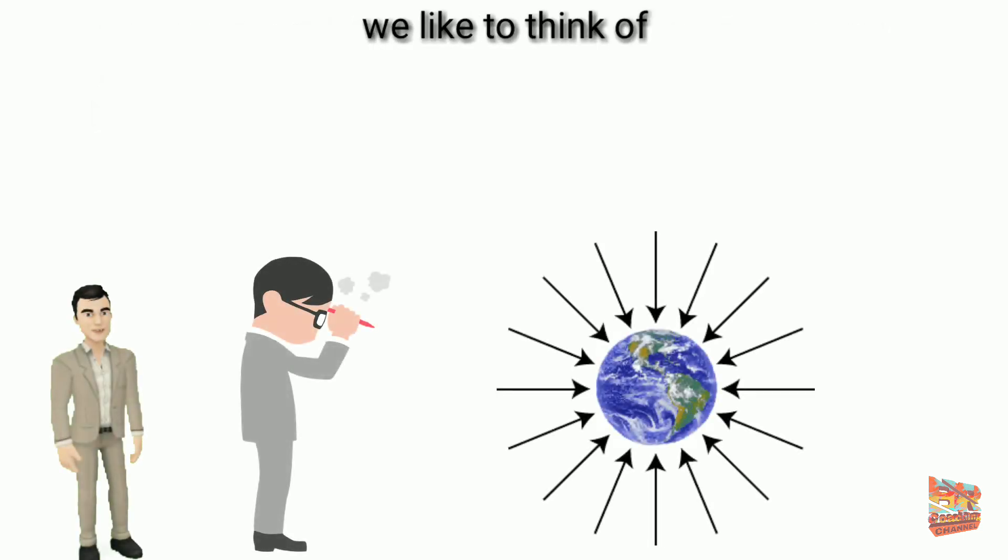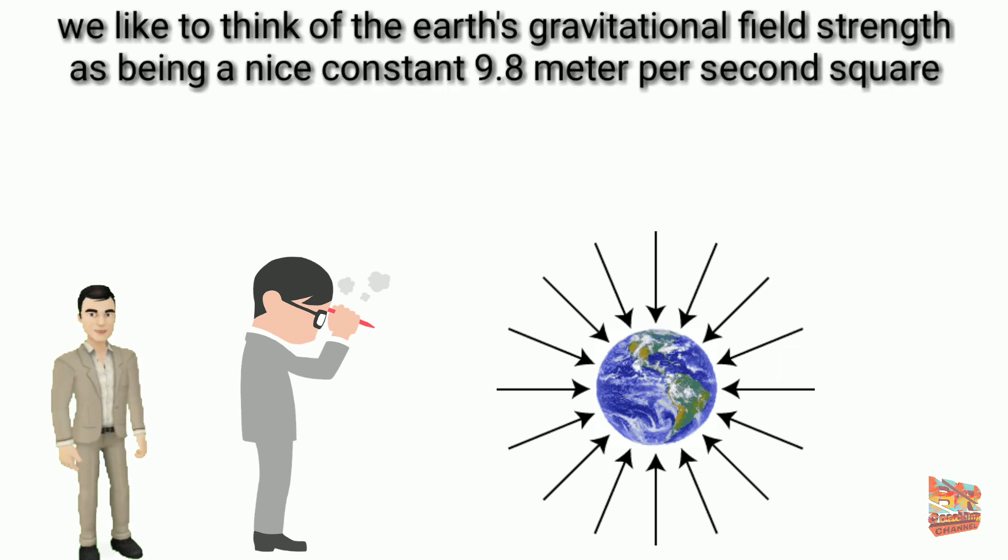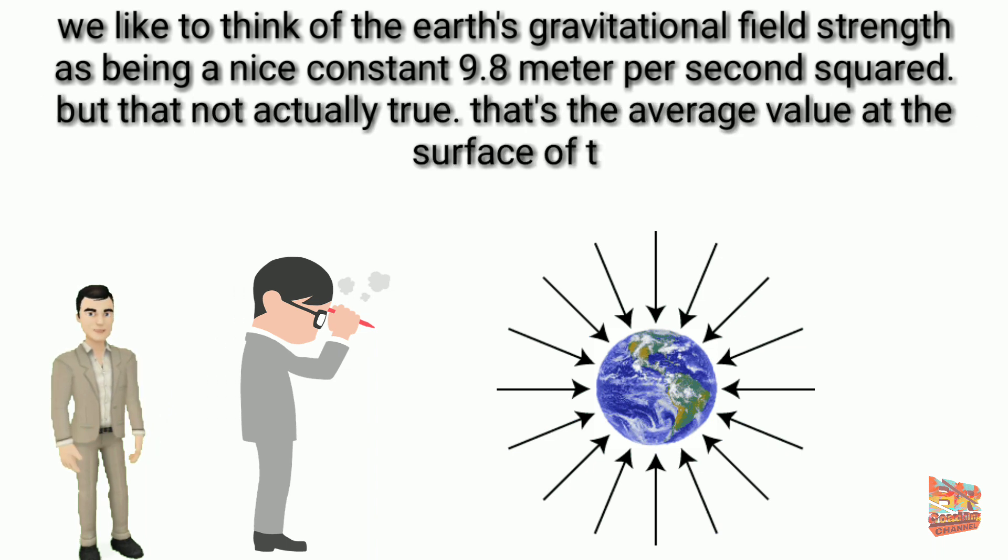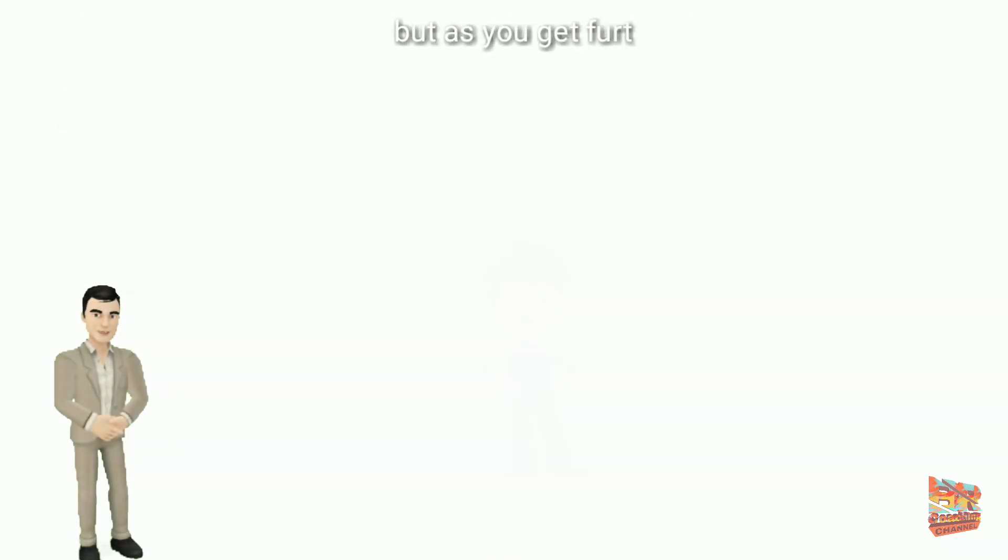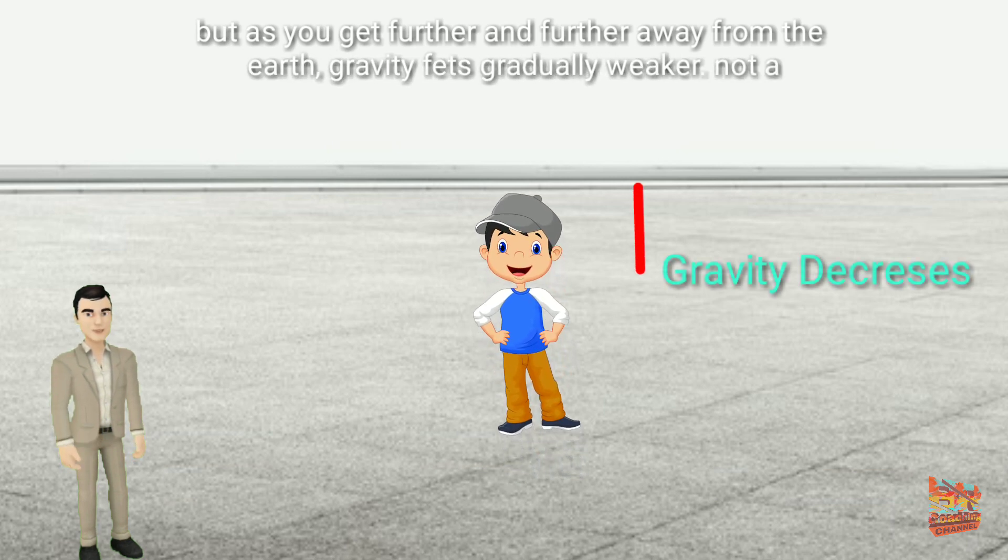We like to think of the Earth's gravitational field strength as being a nice constant 9.8 meters per second squared. But that's not actually true. That's the average value at the surface of the Earth. But as you get further and further away from the Earth, gravity gets gradually weaker.